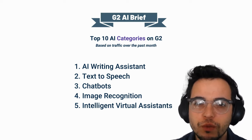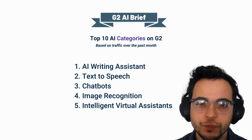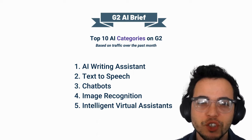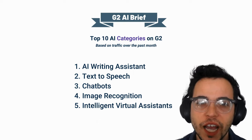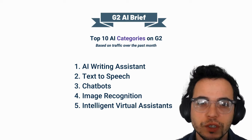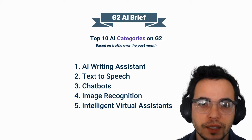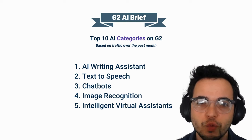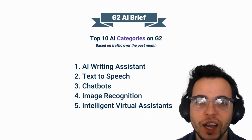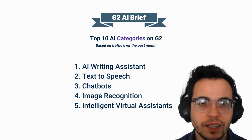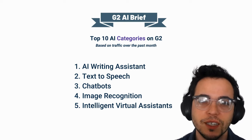The first and most popular category based on traffic for this past month was AI writing systems — those sorts of tools that help companies scale their content, write in all sorts of languages, and provide a really great tool to help with content creation.